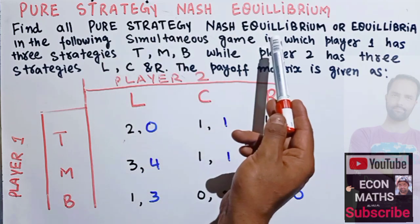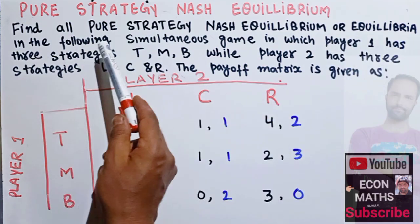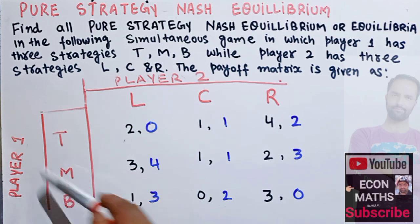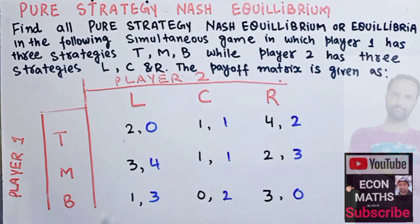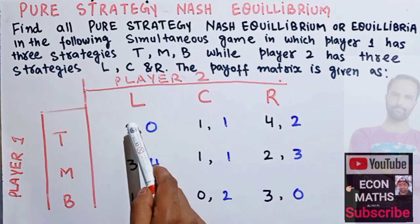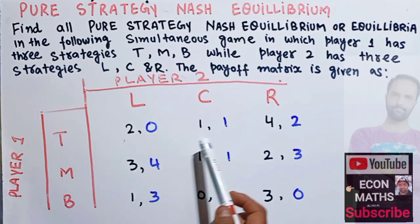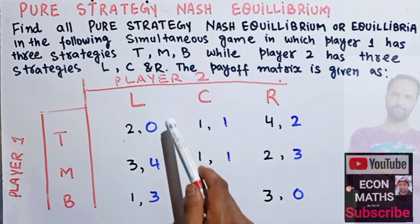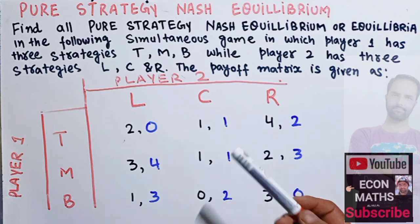We have a game in which Player 1 has three strategies: T, M, and B. Player 2 also has three strategies: L, C, and R. The payoff matrix is given here. The first element in each cell, denoted in black, is the payoff for Player 1, and the second element, shown in blue, is the payoff for Player 2.